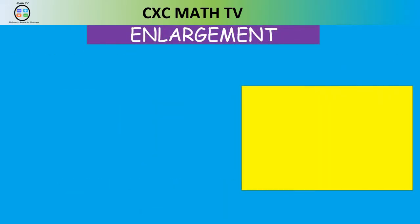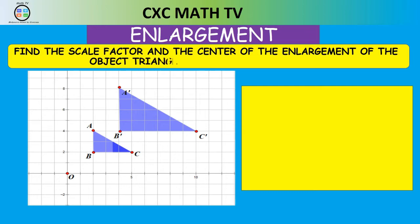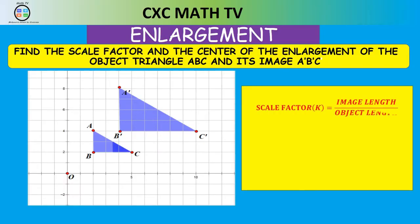Consider this diagram. We are going to find the scale factor and the center of enlargement that maps object triangle ABC to its image triangle A prime B prime C prime. To find the scale factor, we call it K. The formula is: K equals image length divided by object length. You can use any corresponding side of the image and the object.